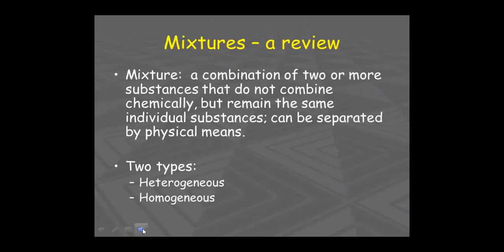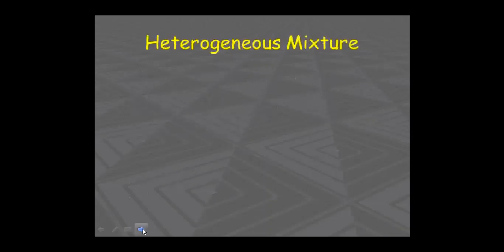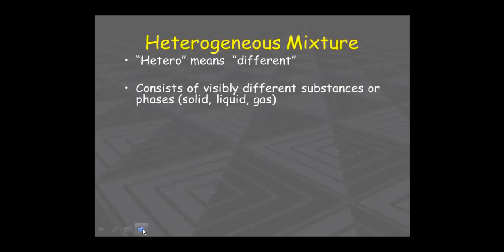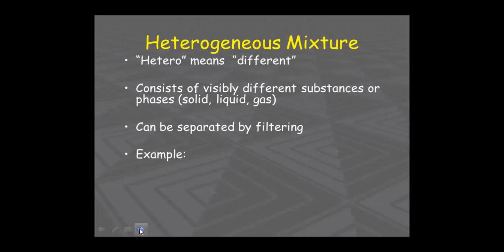What do we mean by homogeneous and heterogeneous? Let's understand heterogeneous mixture first. A heterogeneous mixture consists of different substances — whether solid, liquid, or gaseous. For example, if you mix salt, sand, and water together, that is a heterogeneous mixture, and you can separate it by filtering.